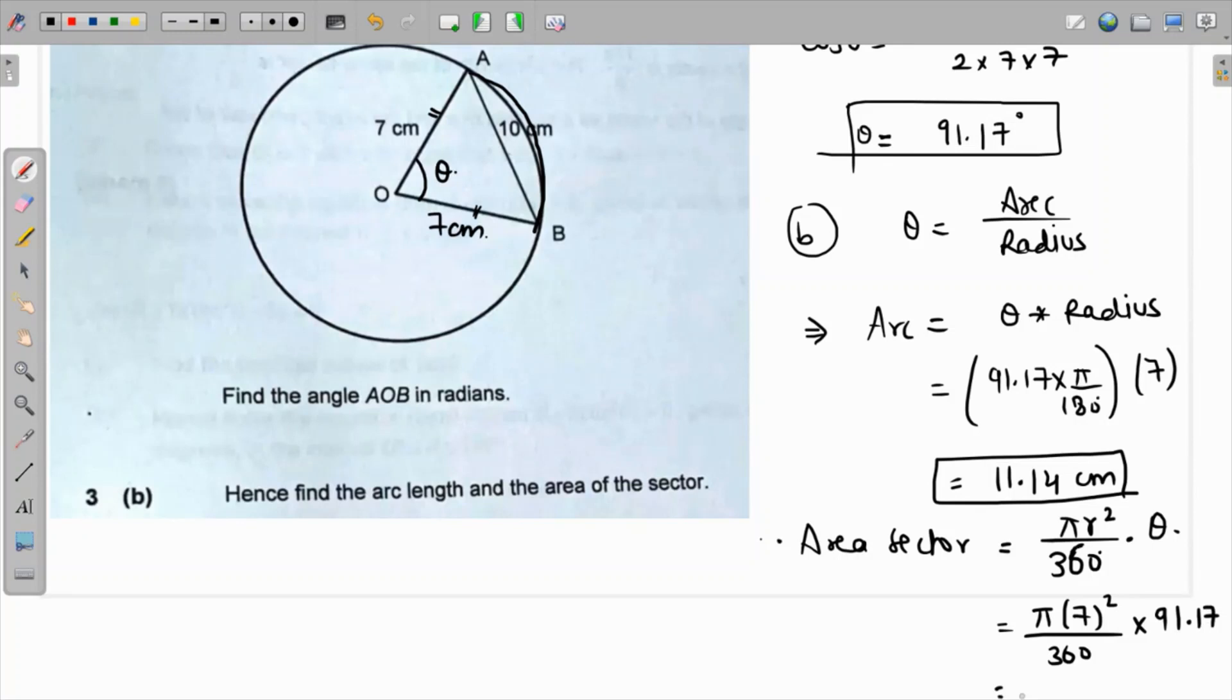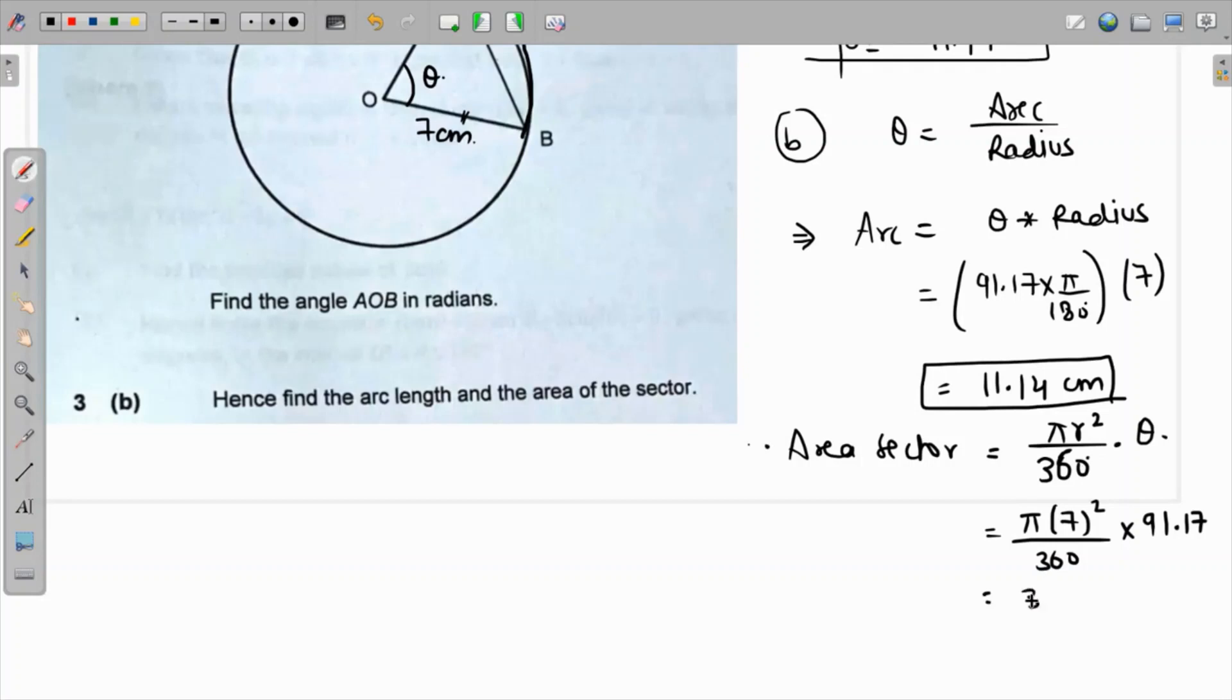Let me pull up my calculator again: 91.17 over 360 times 49 times π. This is coming as 38.94 centimeters squared. So this is the final answer for the area of the sector. Thank you.